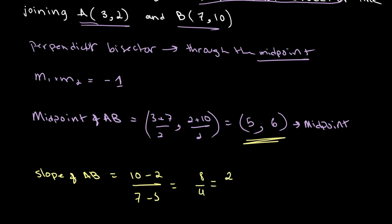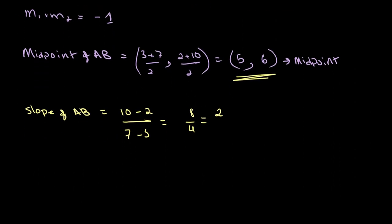If we multiply the slope of AB, so 2 times the slope of our bisector m, this should equal negative 1. From this we get that m equals negative 1 over 2. So this is the gradient of the perpendicular bisector.